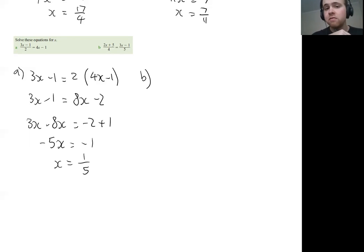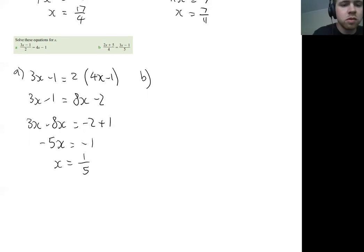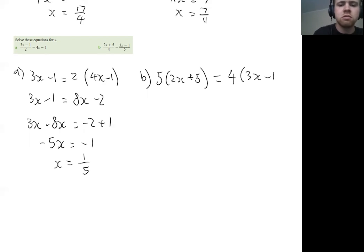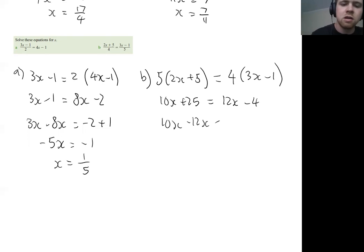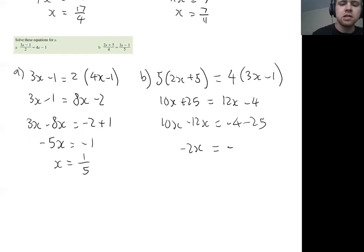Last example here. Now we have two fractions, so we can cross-multiply, but we need to include those brackets because we're going to multiply multiple things. So it's going to become 5 times (2x plus 5) — make sure you include those brackets to multiply both of those terms — equals 4 times (3x minus 1). Expand it out: 10x plus 25 equals 12x minus 4. Get the x's on the same side and everything else to the other side: 10x minus 12x equals minus 4 minus 25. That becomes minus 2x equals minus 29, so x equals 29 on 2. We get rid of those negatives because we're dividing a negative by a negative.